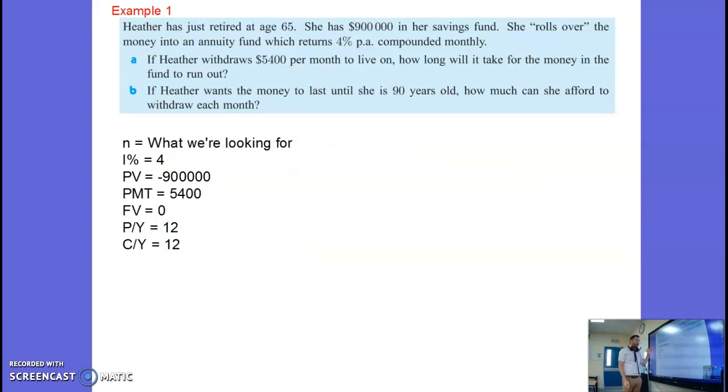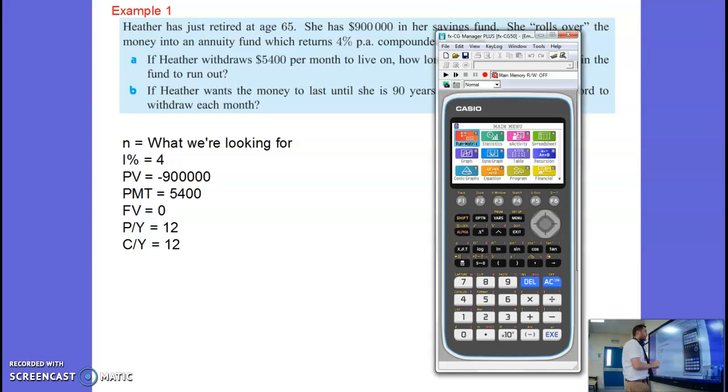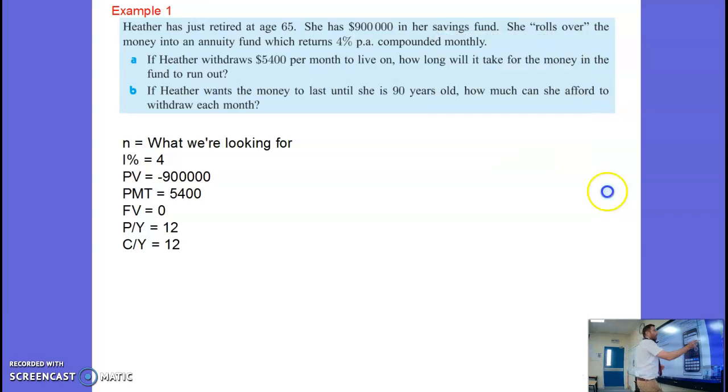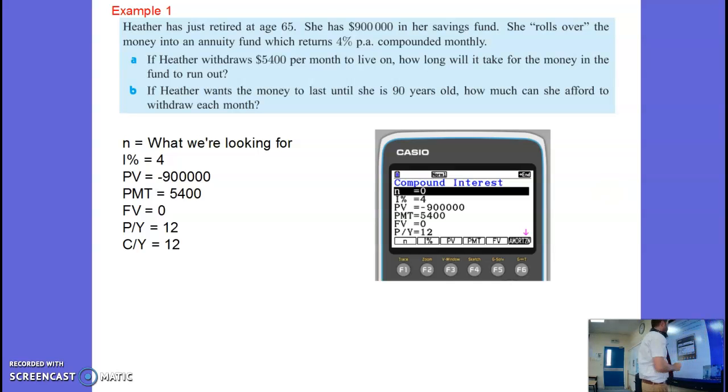So there is all the information I'm going to put into my graphical display calculator. I'll just try and show you that on the financial one. So we're going to go over to financial and we're going to go to compound interest which is F2 there. Compound interest and then you're going to put all of this information in. N is what we're looking for. So we'll make that zero etc etc.